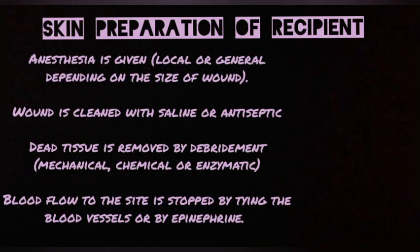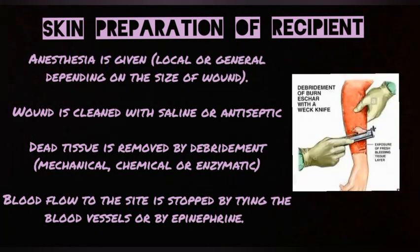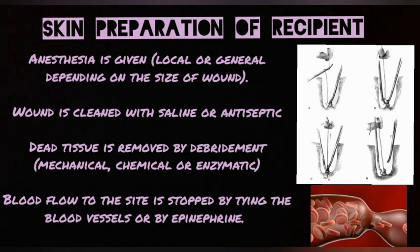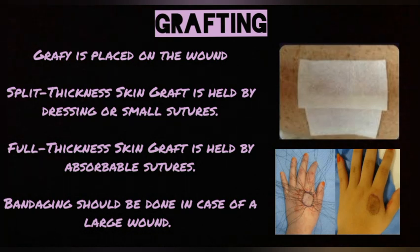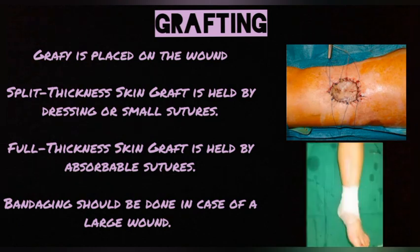After harvesting and donor site care, the recipient site must be prepared. Anesthesia is given first, then the wound is cleaned with saline or antiseptic, and dead tissue is removed by debridement, which can be mechanical, chemical, or enzymatic. Blood flow is stopped by tying blood vessels or administering epinephrine to constrict them. The graft is then placed on the wound — for split thickness grafts, it is held by a dressing or small sutures; for full thickness grafts, absorbable sutures are used. Bandaging is also done for large wounds.